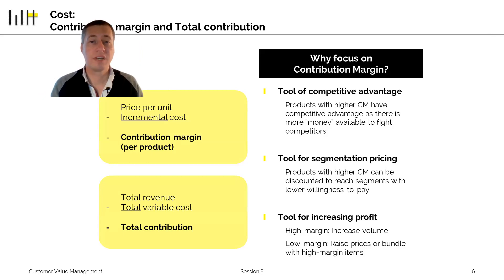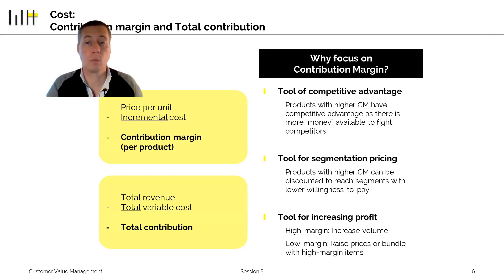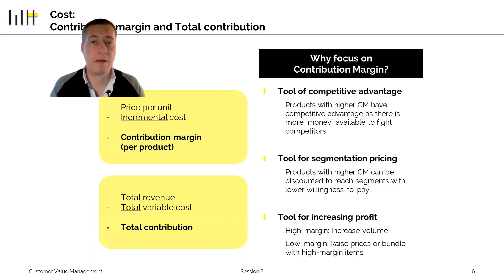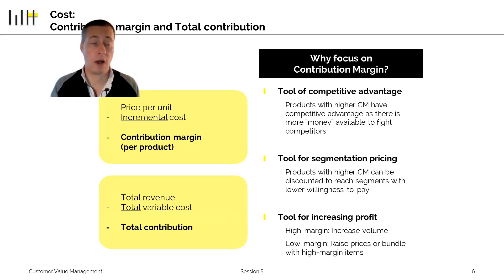You might wonder why we care about contribution margin at all. You take the price per unit minus the incremental cost to get the contribution margin, or total revenue minus total variable cost for total contribution. Why not simply use product profitability? There are three factors where contribution margin plays an important role. First, it gives you a sense of your competitive advantage — the higher your contribution margin, the more you can spend to fight off competitors. It also gives a tool for segmentation pricing, since a high contribution margin allows you to lower prices more considerably for customers with lower willingness to pay. Overall, it shows how you can best increase profit: for high-margin products, increase volume; for low-margin products, raise prices or use price bundling with high-margin products.